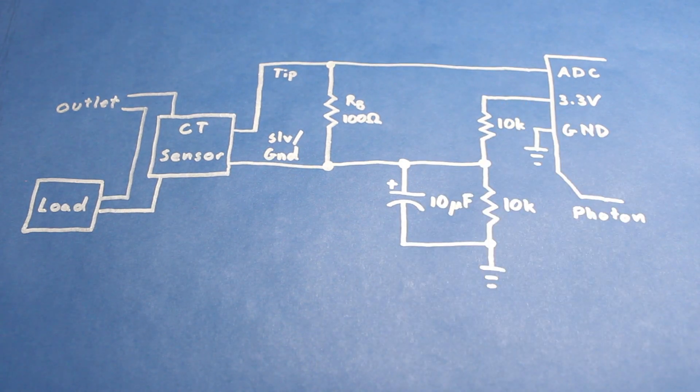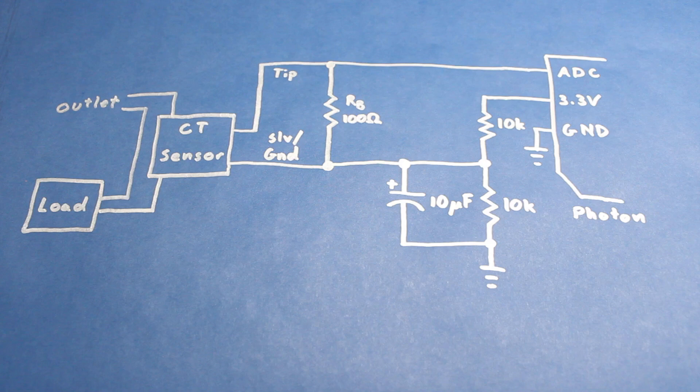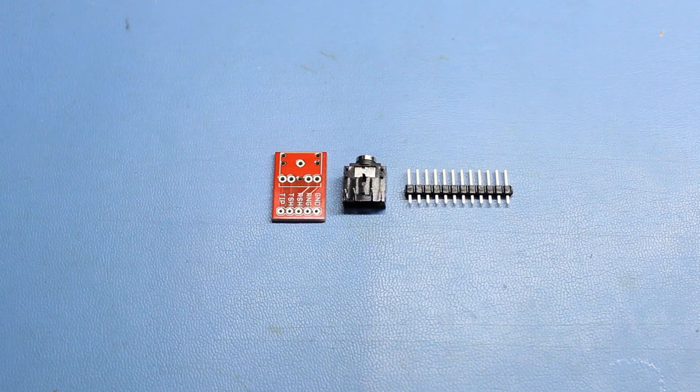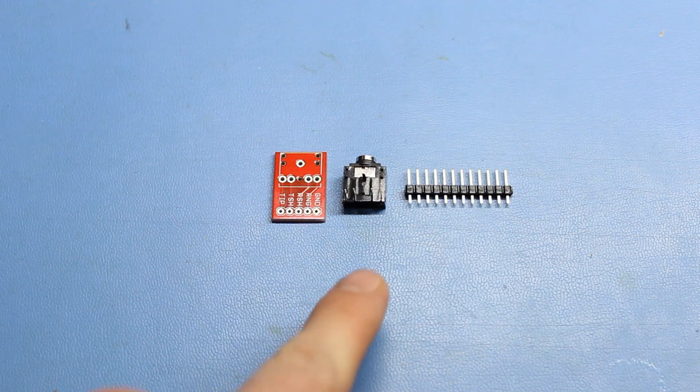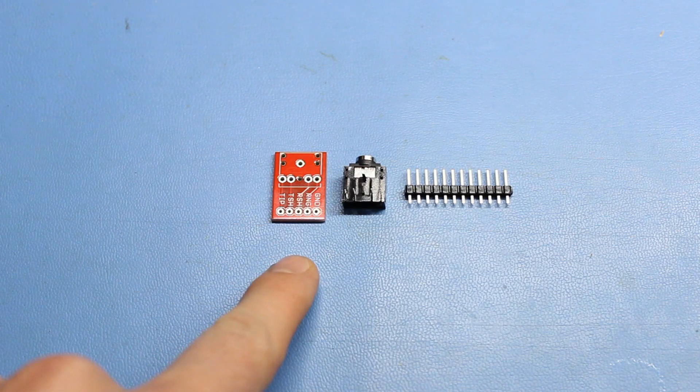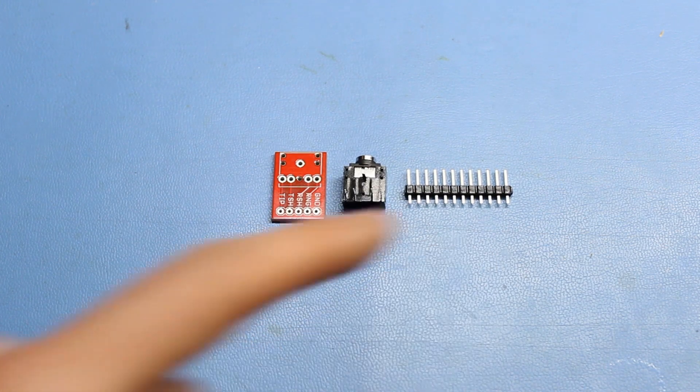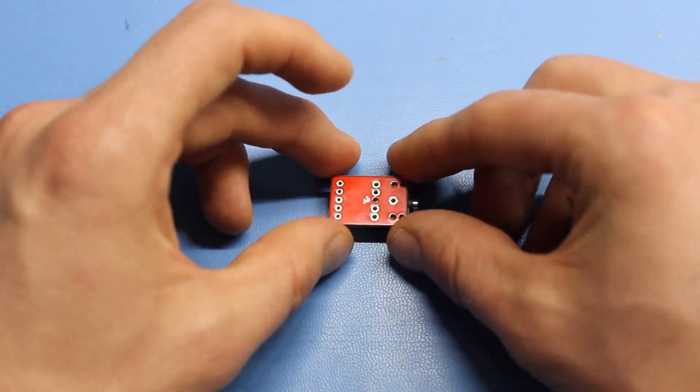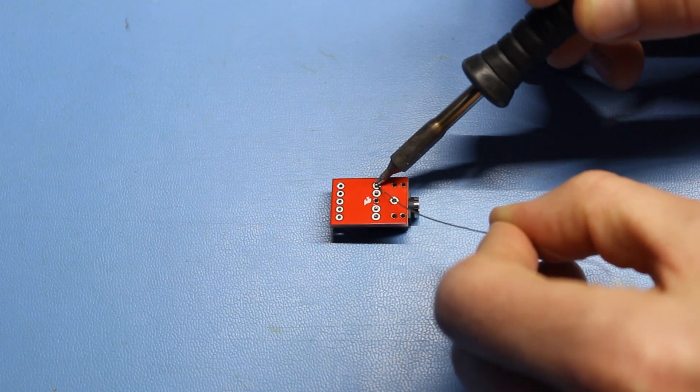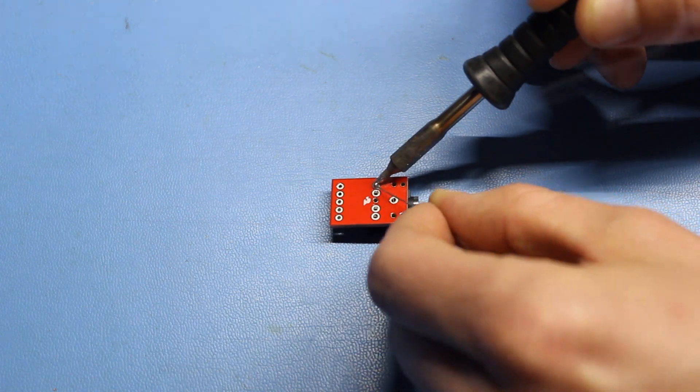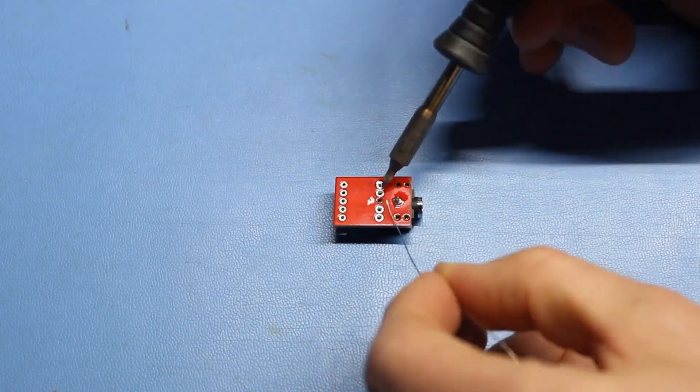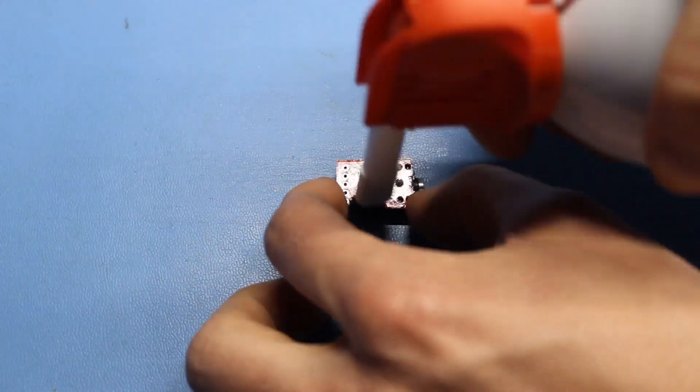Note that the output of our CT sensor has a 3.5 millimeter TRS plug. We'll designate the tip as the part that's connected to the ADC, and the sleeve, or sometimes labeled ground connection as the part that's connected to the voltage divider. To plug in the CT sensor to the breadboard, we'll need to solder a 3.5 millimeter audio jack to a breakout board. I'm using a breakout board from SparkFun, but there are plenty of others available. We'll also need some .1 inch headers. First, place the audio jack onto the breakout board's top side. Make sure you use the soldering iron tip to heat both the pad and the pin before feeding solder into the joint. Repeat this for all the pins and clean the board with rubbing alcohol or something like flux off.